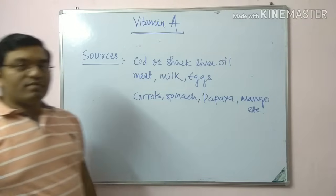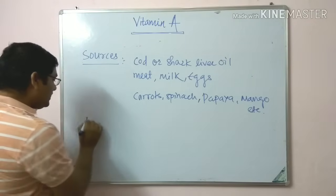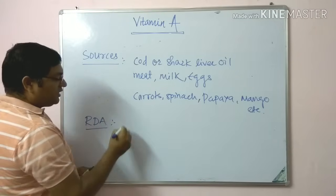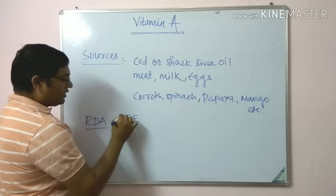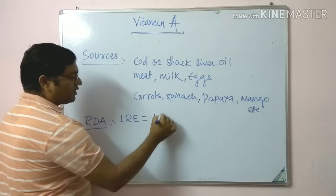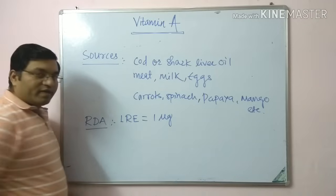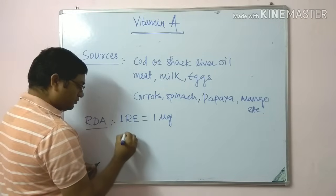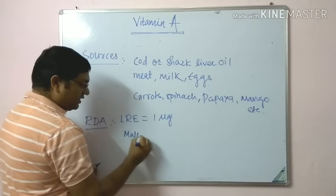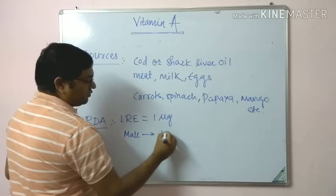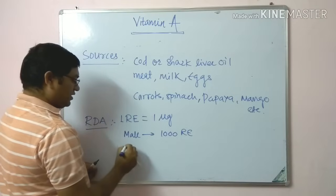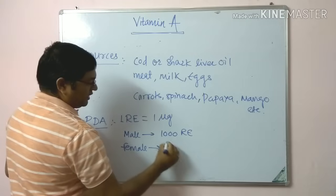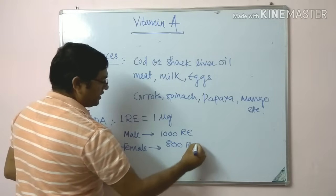The recommended daily allowance (RDA) of vitamin A is expressed in retinol equivalents. One retinol equivalent equals one microgram of retinol. For males, the RDA is 1000 retinol equivalents, and for females it is 800 retinol equivalents.